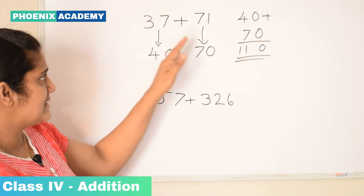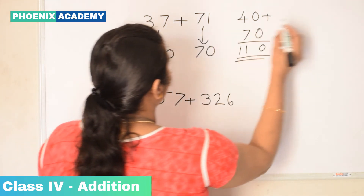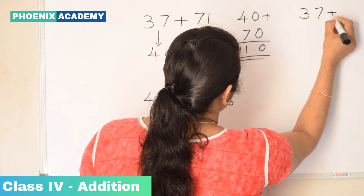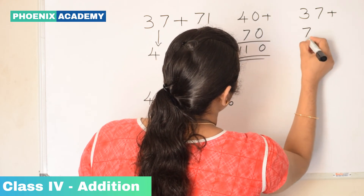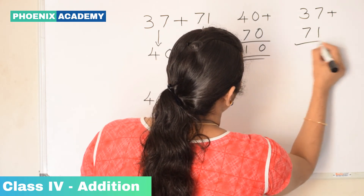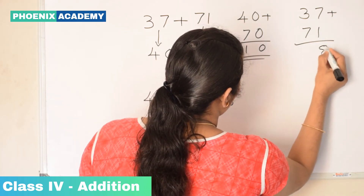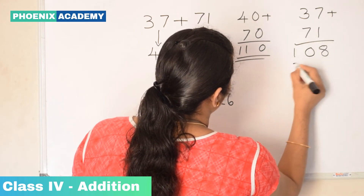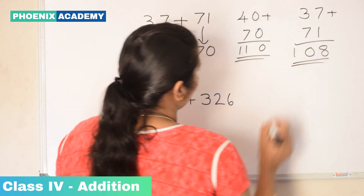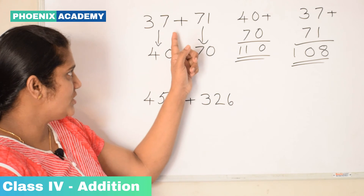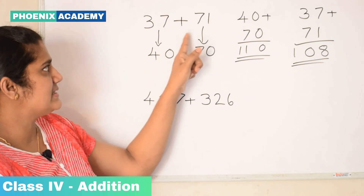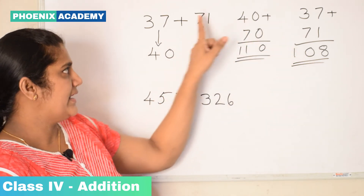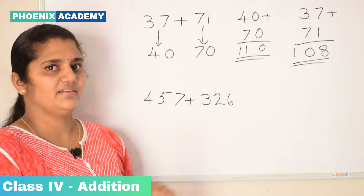So what is the actual sum of these numbers? Let's add 37 plus 71. 7 plus 1 is 8, and 3 plus 7 is 10. So the actual sum of 37 and 71 is 108, and the estimated sum is 110.